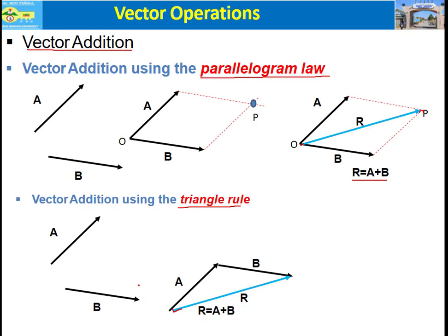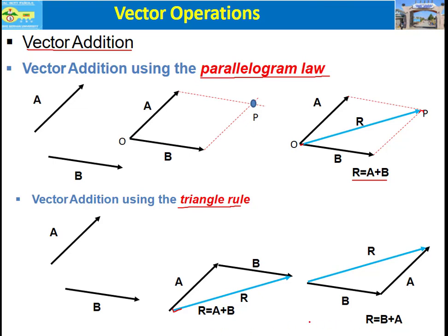If instead we want R equal to B plus A, we connect the head of vector B to the tail of vector A. That gives the same resultant, confirming that A plus B equals B plus A.